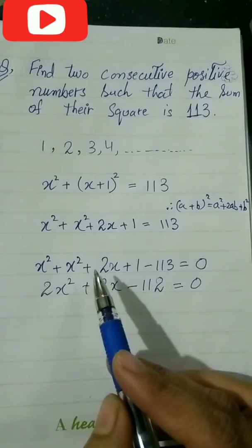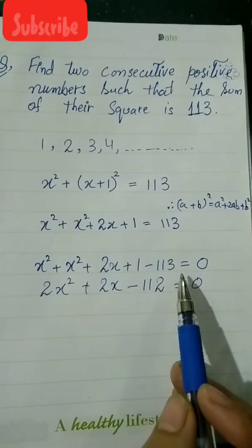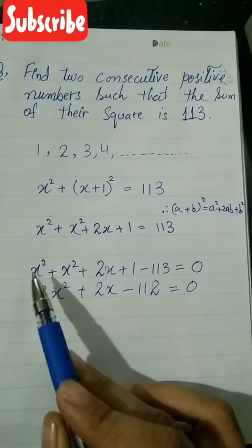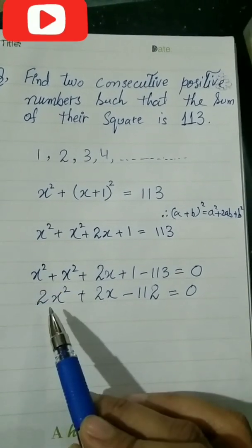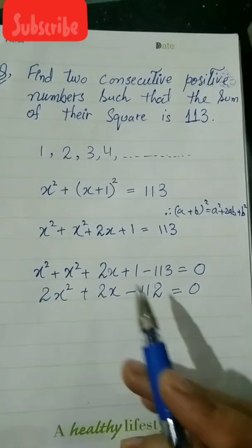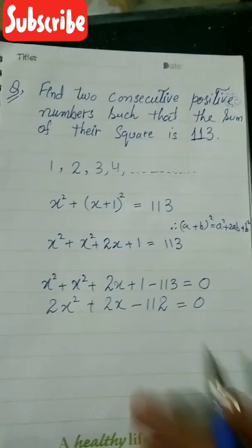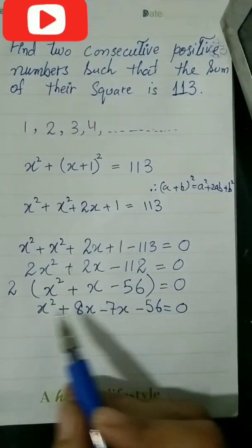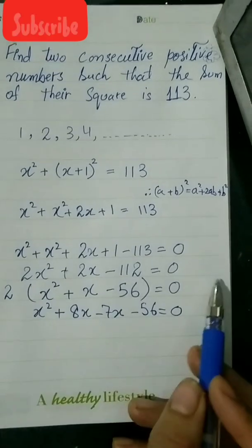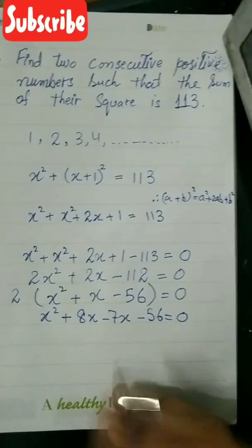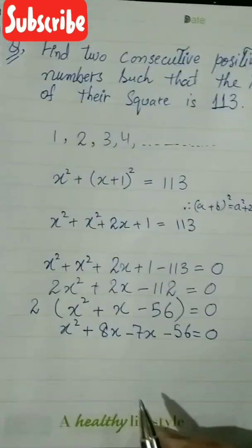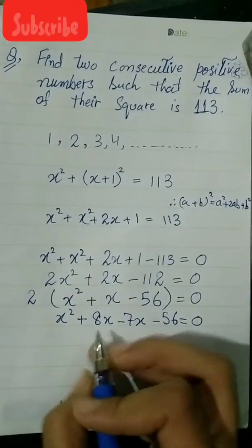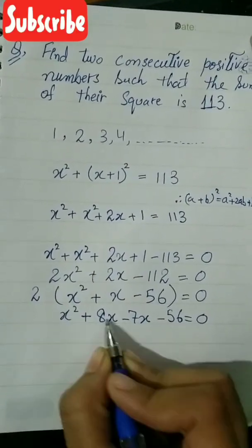We switch 113 to the other side, making it equal to zero. From 113 we minus 1, it becomes 112. Now we have 2x² + 2x + ... and we take 2 as common factor out of the equation, then divide both sides by 2.